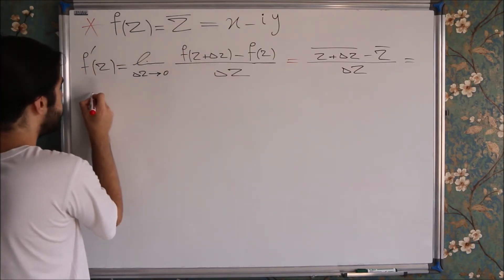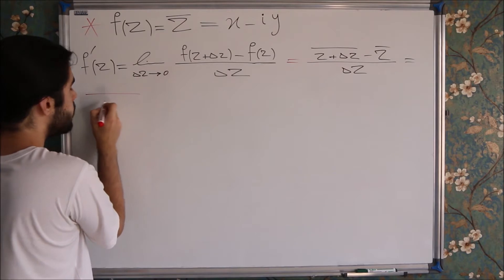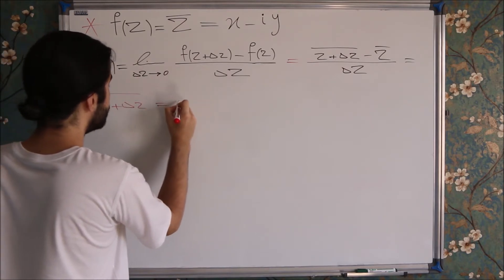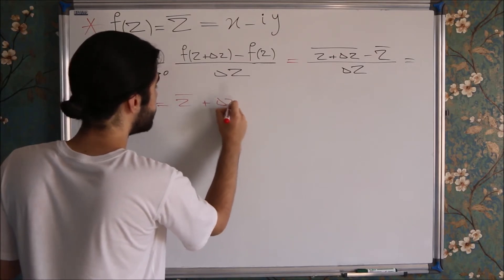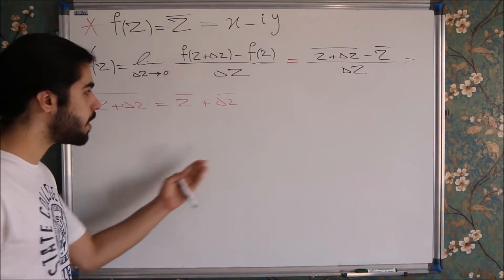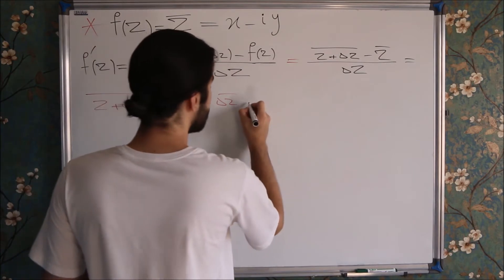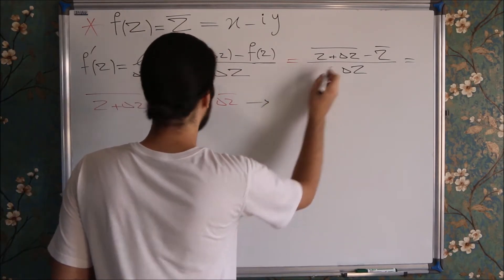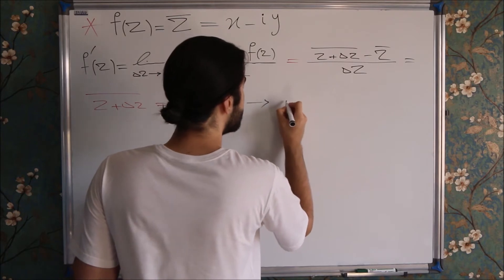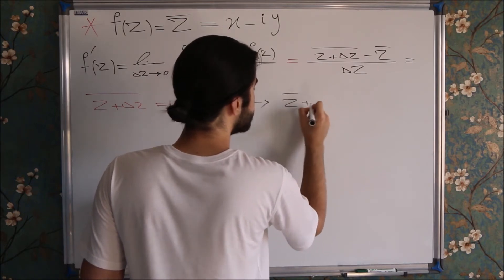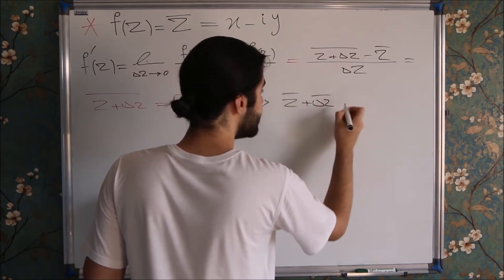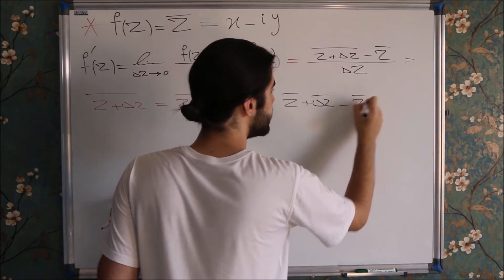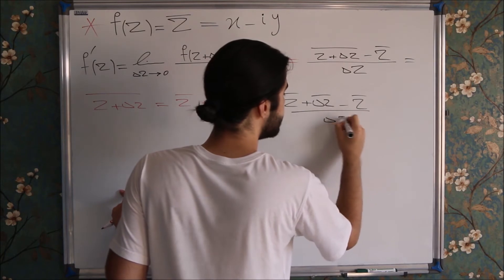Using the definition of conjugate, we know that the conjugate of Z plus Delta Z is equal to the conjugate of Z plus the conjugate of Delta Z. Now we can use it at the top of our quotient, and we will get the conjugate of Z plus the conjugate of Delta Z minus the conjugate of Z over Delta Z.